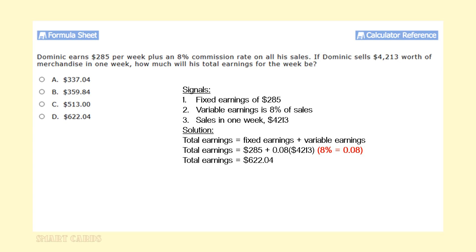we're going to take the $285 and add on 0.08 times $4,213. Our order of operations says that we must first multiply 0.08 times $4,213. Then we add it on to the $285, which would give us his total earnings for the week, which would be $622.04, which would be option D.